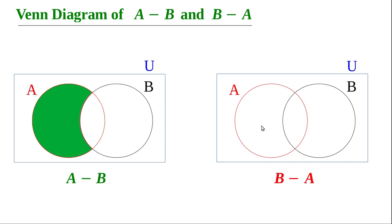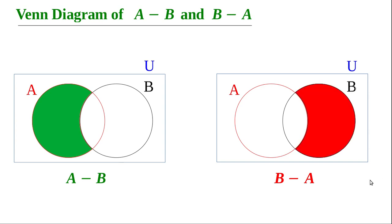In the same way we can draw B minus A. Shade the portion B minus A yourself. B minus A is a subset of B — it is the portion in B not in A. This shaded portion represents B minus A. Draw these two figures beautifully in your notebook.